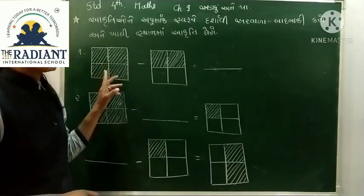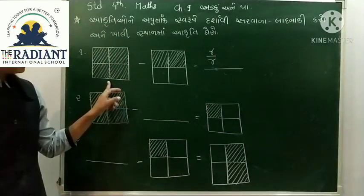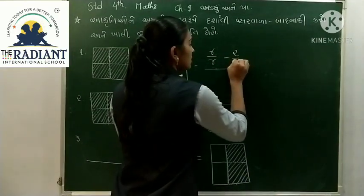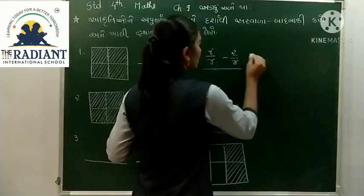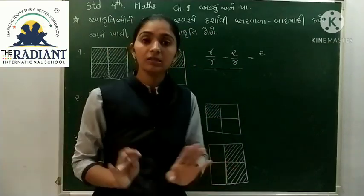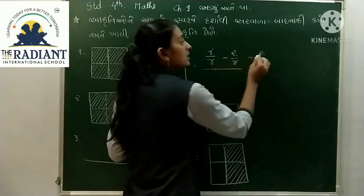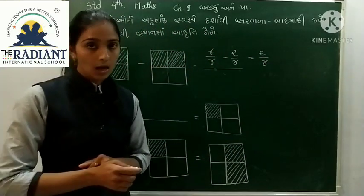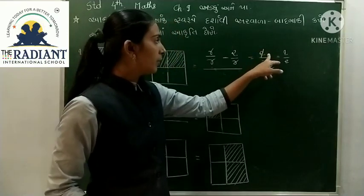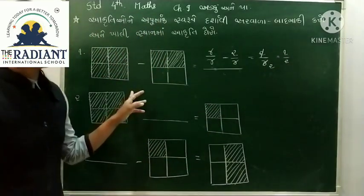એક બૉક્સના ચાર ભાગ કળર કરેલા છે, બરાબર. હવે ચારમાંથી બે જાય તો કેટલા બચે? બે. અને છેદ - આપણે સરવાળામાં જે રીતે કર્યું, એ જ રીતે બાદબાકીમાં પણ કરીશું. ચારમાંથી 2 જાય તો 2, અને છેદ 4, તો આપણો જવાબ 2/4 આવશે.